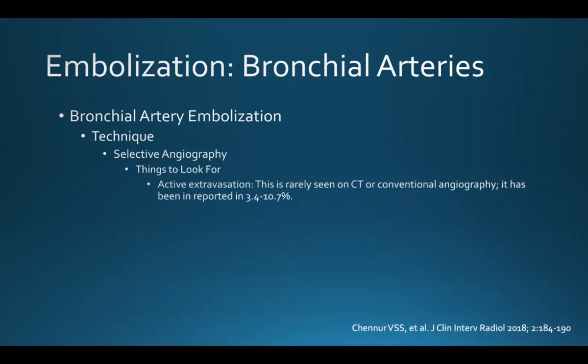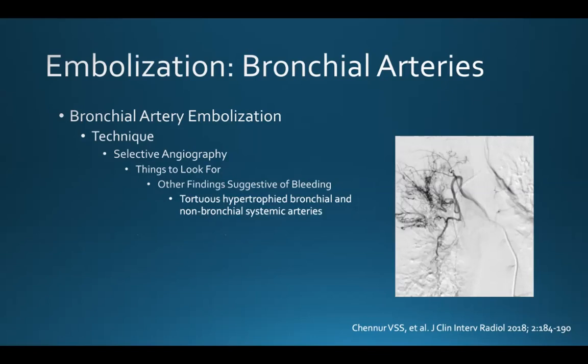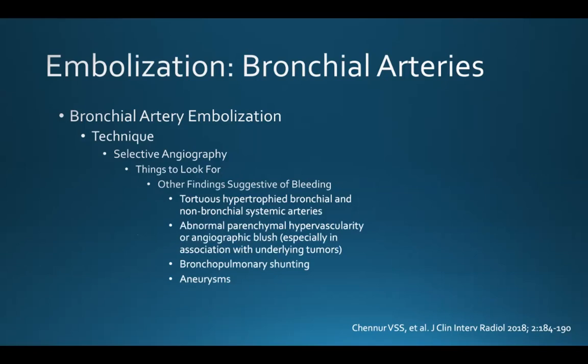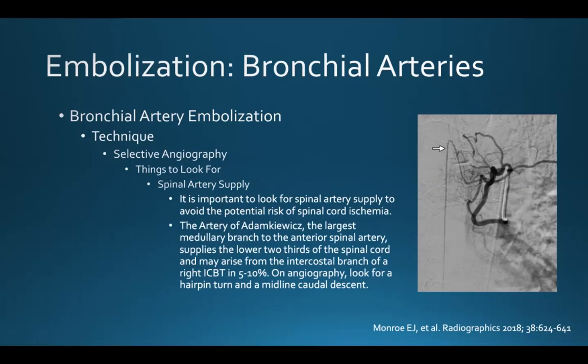When performing selective angiography, there are several things to look for. First, you're going to look for active extravasation — this is rarely seen on CT or conventional angiography, reported to occur in 3% to 10% of cases. Most commonly, you're going to see tortuous, hypertrophied bronchial and non-bronchial systemic arteries. You may see abnormal parenchymal hypervascularity or an angiographic blush, especially in association with underlying tumors. Other findings include bronchopulmonary shunting and aneurysms.